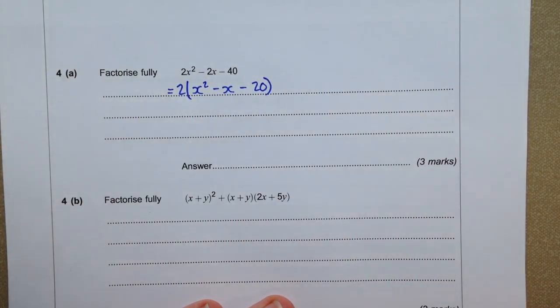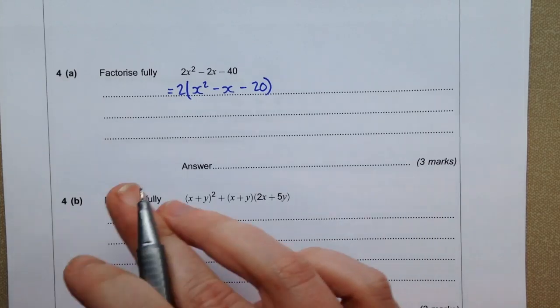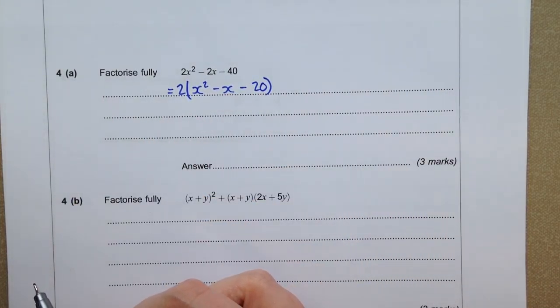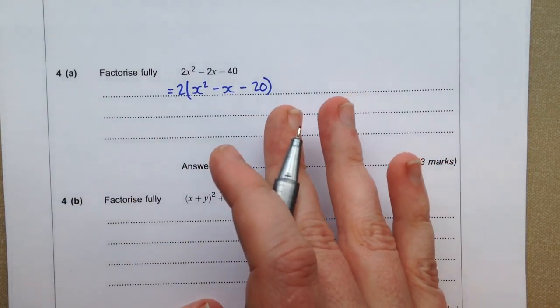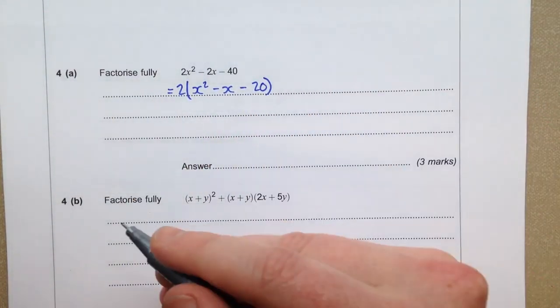Notice I haven't changed the expression. I've just taken 2 out as a factor. I've factorised it already. I haven't just divided by 2 like I could do if it said equal 0 either.